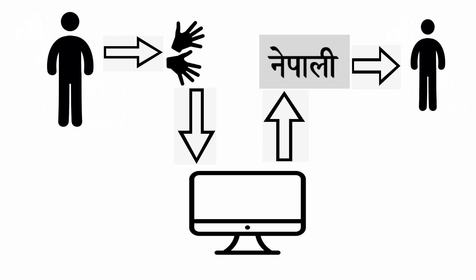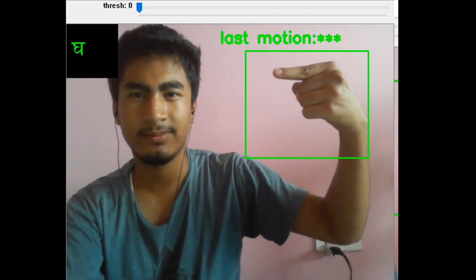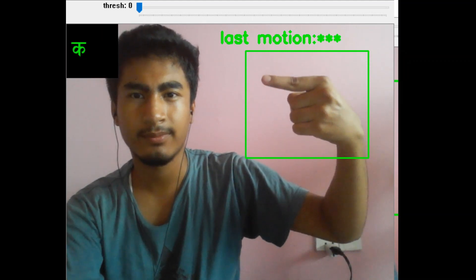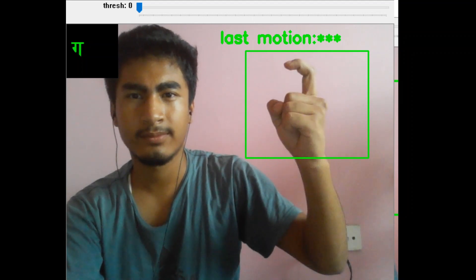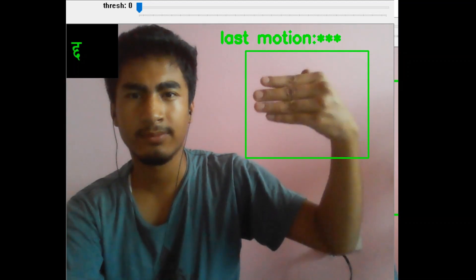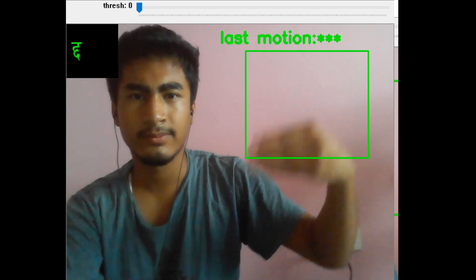Now let us look at the actual demonstration of our project. The green box on the screen is known as field of interest where we place our hands to provide required signs. Then the equivalent letter is displayed in the top left corner of the screen. This application can recognize all Nepali alphabets from ko to gyo.